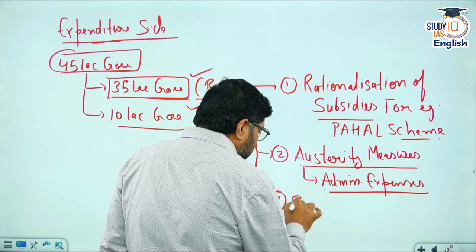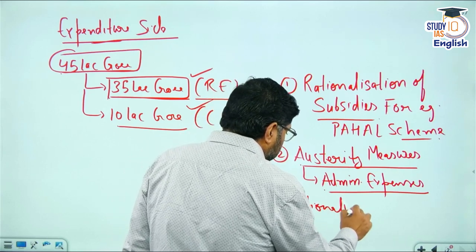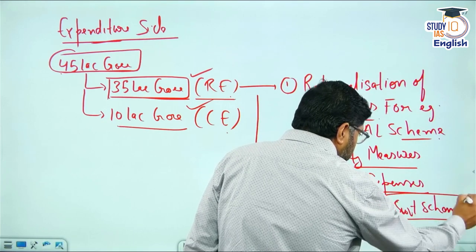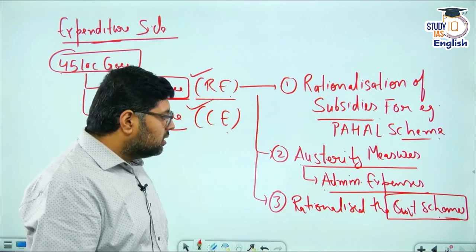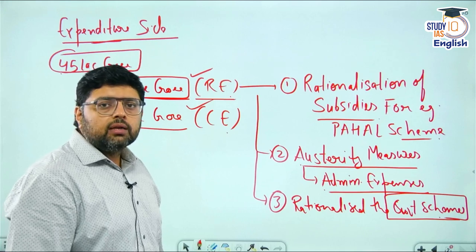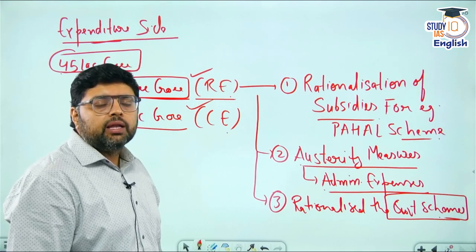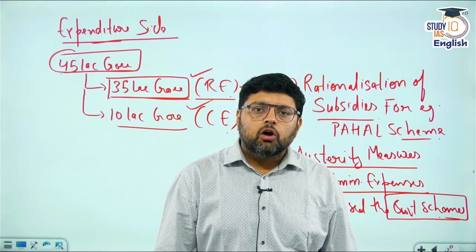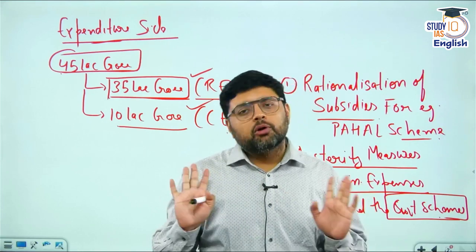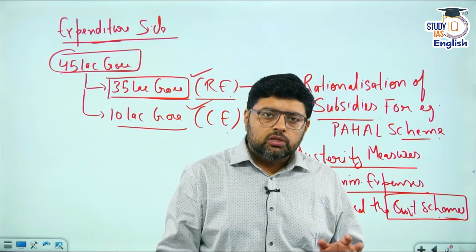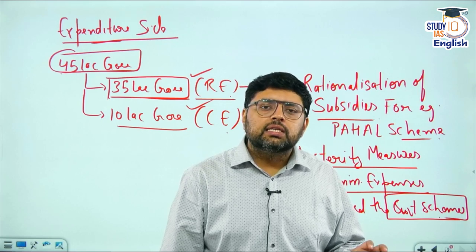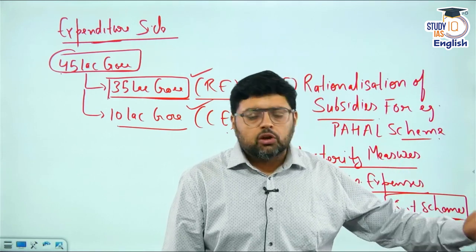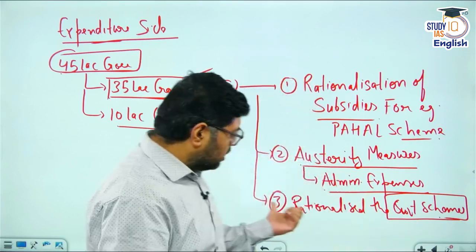Third, the government has rationalized government schemes. Some schemes are overlapping in nature — the same scheme being run by both the central government and state governments, leading to duplication. The government decided to avoid this overlap. On the recommendation of the Finance Commission, the share of state governments was increased, and central government told states it is now their responsibility to run those schemes. This is called rationalization of government schemes.